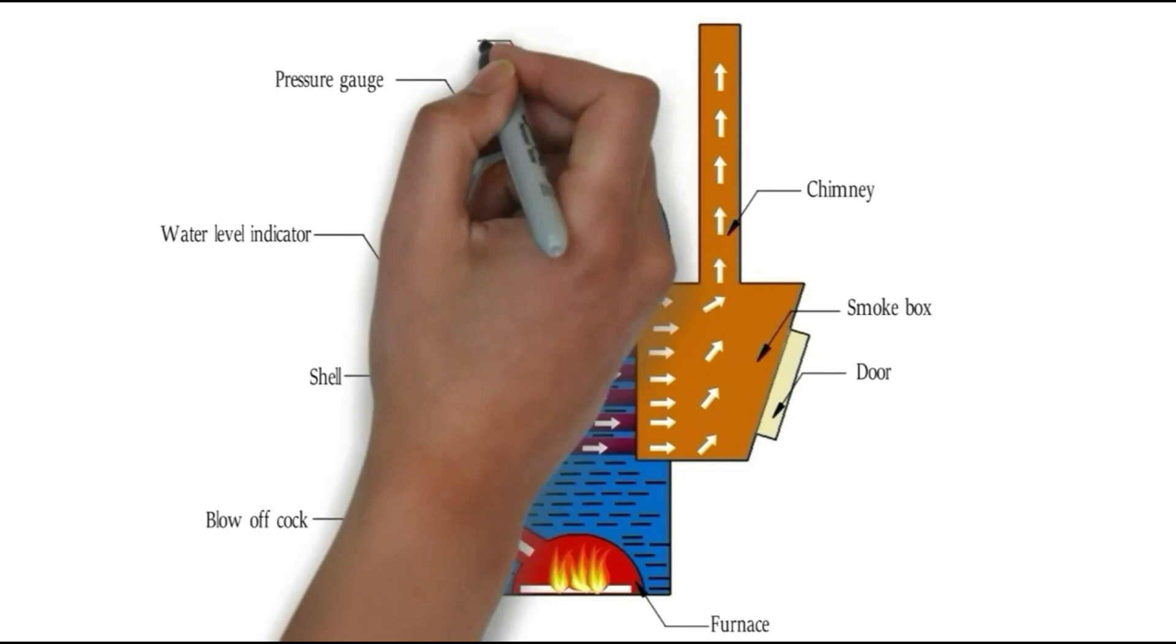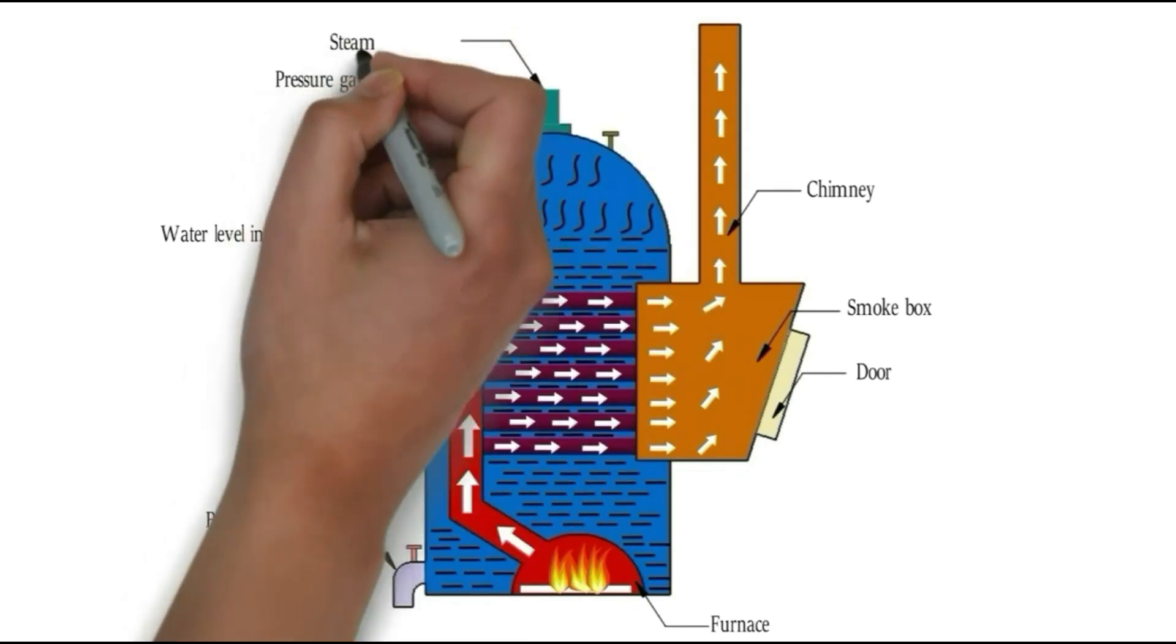Pressure gauge is used to measure the pressure of steam produced inside the boiler.